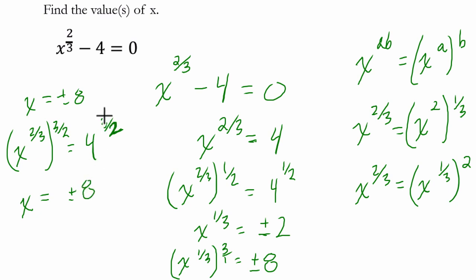Now you could raise it to the 3rd power first, so 4 to the 3rd is 64, and then take the square root of that which would be positive or negative 8 still. So either way we still get the same answer.